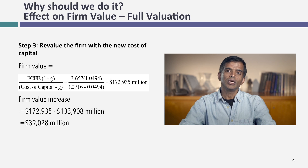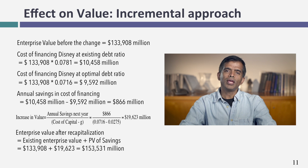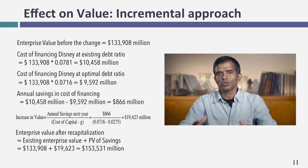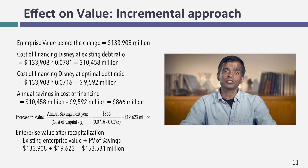Here's the fatal flaw: that 4.94% growth rate is being assumed in perpetuity — it's way too high to be a constant growth rate forever. If Disney grew at that rate while the economy grows at 2 to 2.5%, it would outstrip the economy. So here's a more realistic approach. I took Disney's existing enterprise value of $133.9 billion and estimated the cost of funding the company at both the existing cost of capital (7.81%) and the new optimal (7.16%). The annual savings from moving to the optimal is $866 million, and the value increase should be the present value of those savings over time.